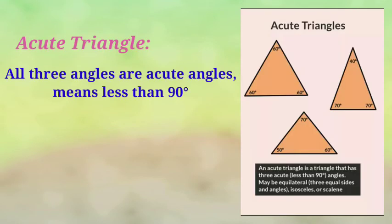In next category you can divide the Triangles based on their angle. In Acute Triangle all 3 angles are acute triangles means less than 90 degrees. It may be Equilateral, Isosceles or Scalene.